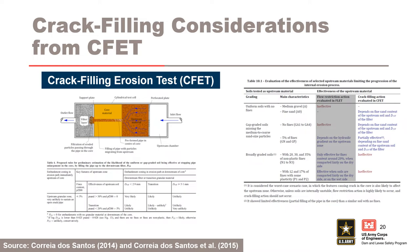Broadly graded soils that can sustain a crack or pipe are very unlikely to be able to provide crack filling action. Nevertheless, they can avoid the enlargement of the pipe and even diminish the leakage flow, providing particles to the downstream zone required for a filtering mechanism.